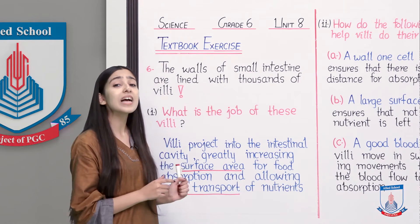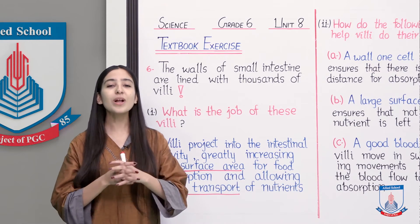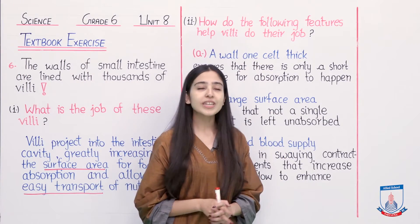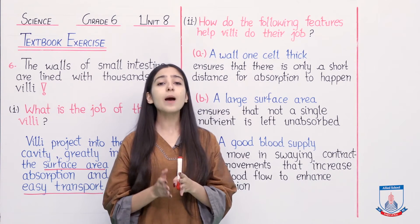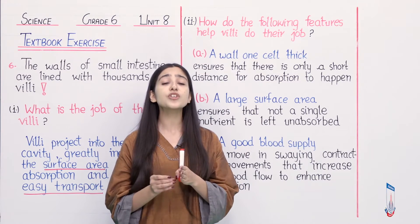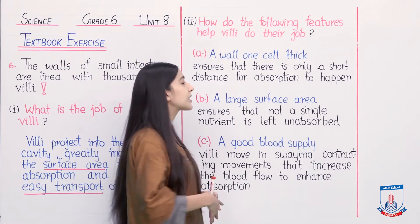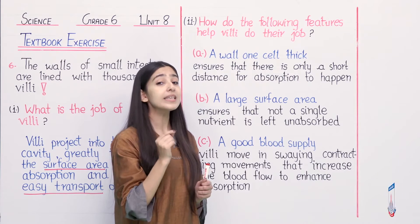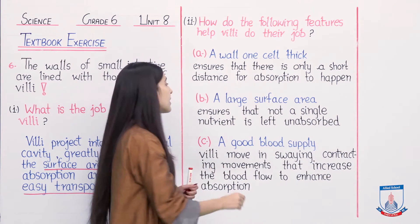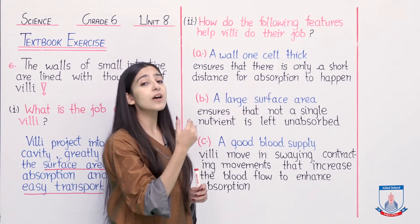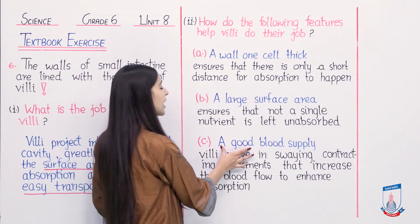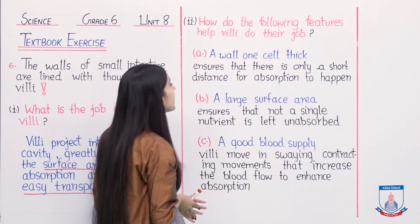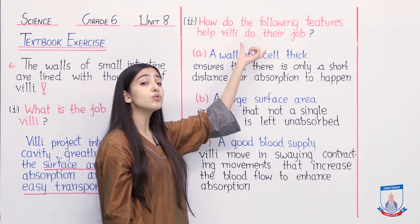Please pause the lecture now and note this answer in your notebooks, then come back. Well done students! We have written the answer to question number 1. Now we are moving towards the second question: 'How do the following features help villai do their job?' Three features of villai are given: (a) a wall one cell thick, (b) a large surface area, and (c) a good blood supply. The question is how these features help villai do their job.